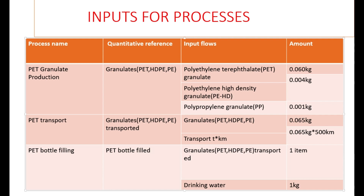For the production of PET granulates, we require granulate forms — granulates in PET, HDPE, and PE forms. Each requires polyethylene terephthalate PET granulate amounting to 0.060 kilograms, polyethylene high density granulate amounting to 0.004 kilograms.